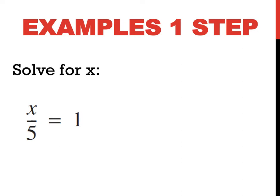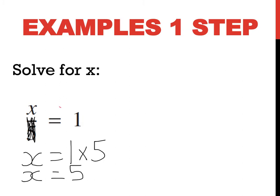This last one-step example says solve for x: x divided by 5 equals 1. The opposite of dividing by 5 is multiplying by 5. If I multiply the left-hand side by 5, I'll get rid of the 5 and I have to do the same to my right-hand side. So 1 times 5 is 5. Equal signs under equal signs, showing all my working. I really hope you're seeing a trend.